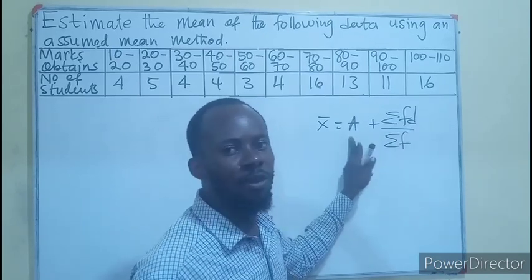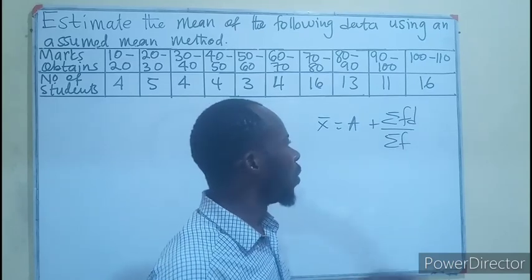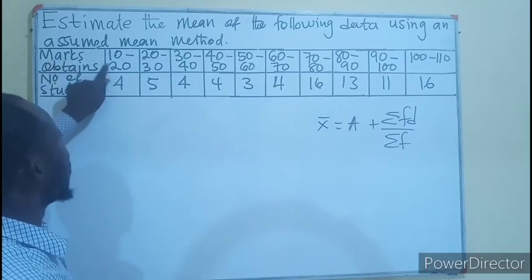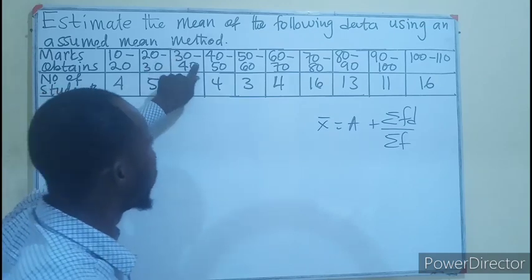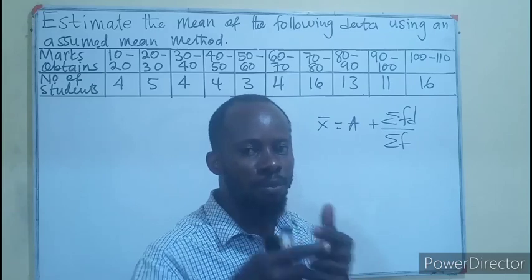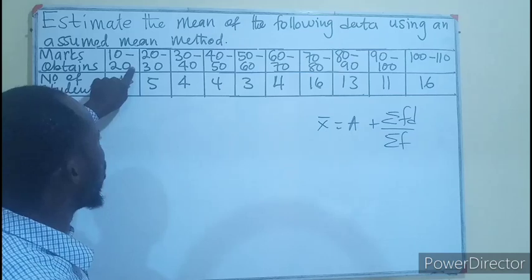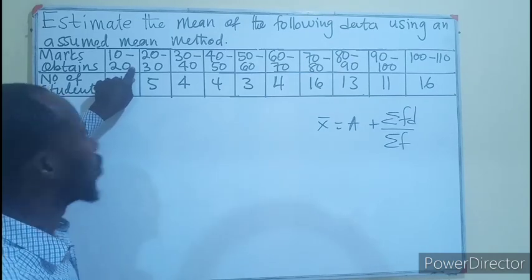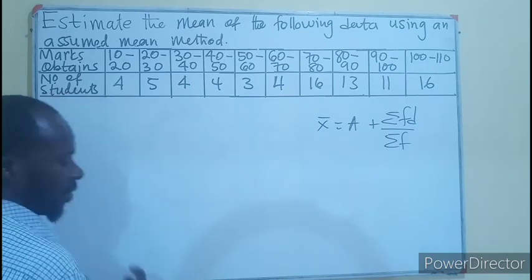It means we need a column for the marks obtained. The marks from 10 to 20, 20 to 30, 30 to 40, in that order. We need to find the midpoint of the data, so you add the upper limit plus the lower limit divided by two. That will give you the midpoint of the data that will represent the x.